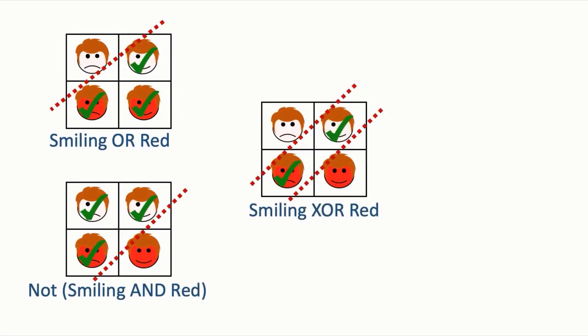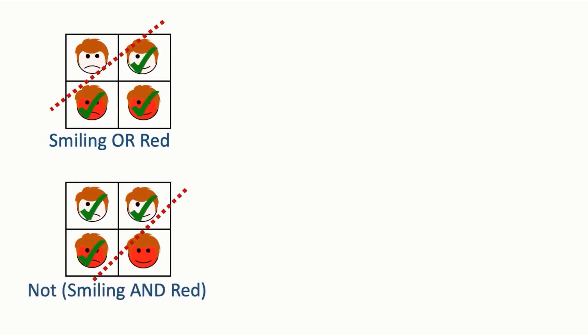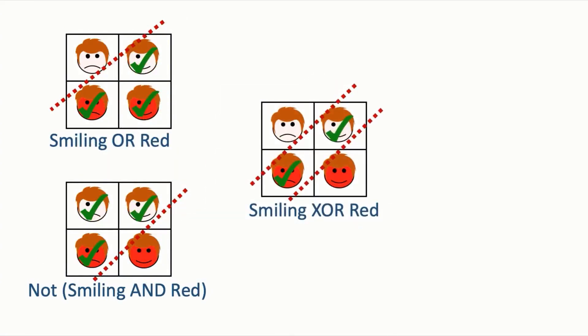Let's see how this works. Let's take all data points that satisfy the outputs of the smiling OR red model — all faces that are either smiling, red, or both. Then let's look at the data points that satisfy NOT both smiling and red — all faces other than the red smiling face. When you combine the criteria of these two individual models, you end up with the XOR: either a face that is pale and smiling, or red and frowning.